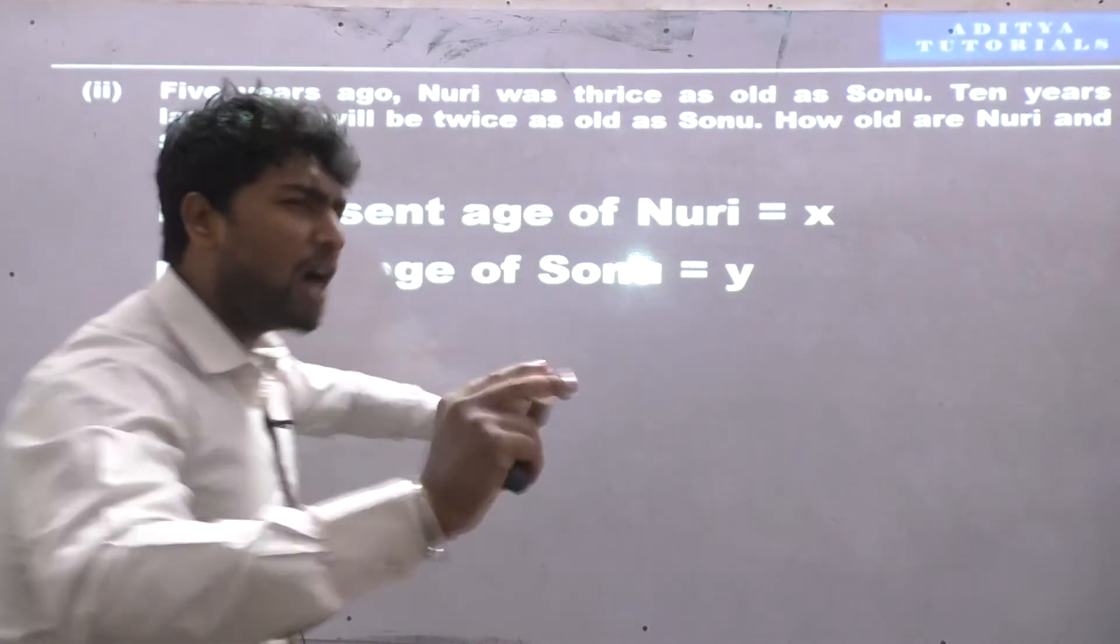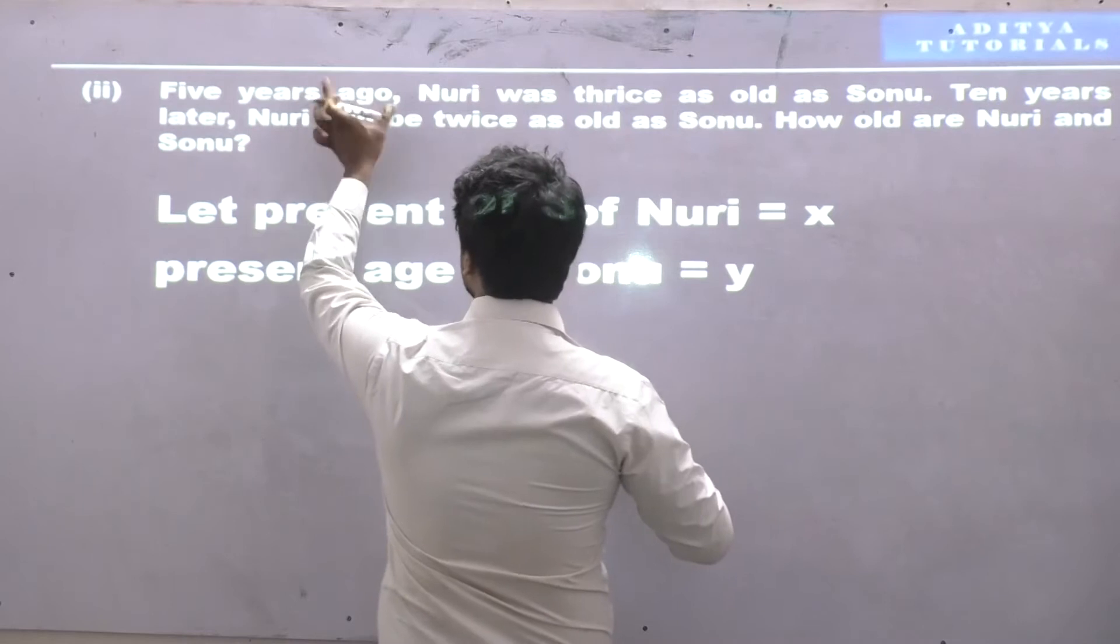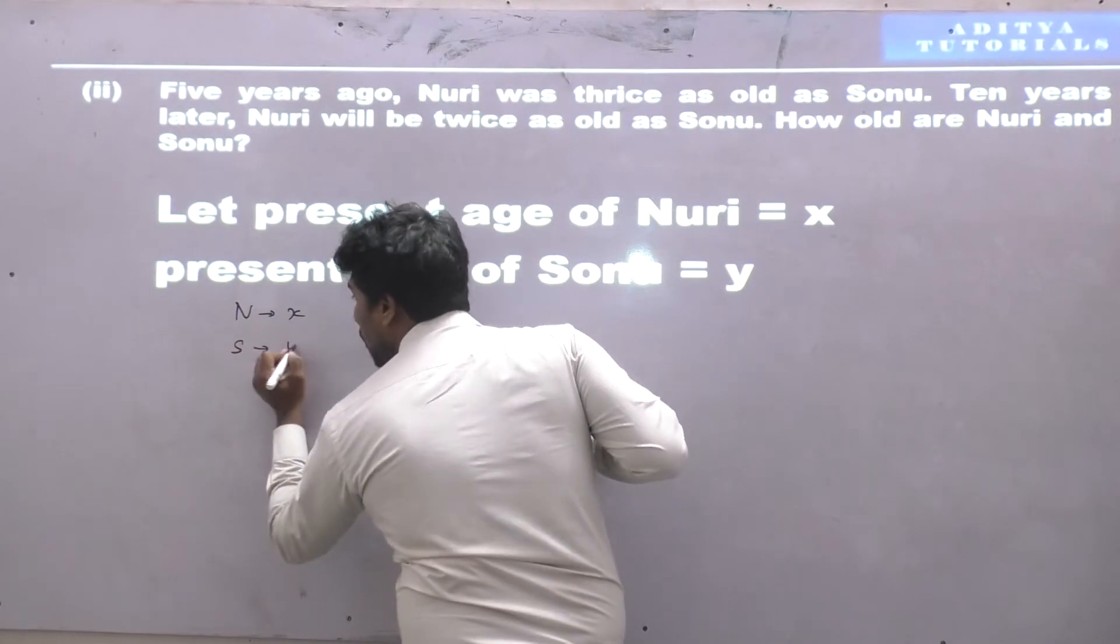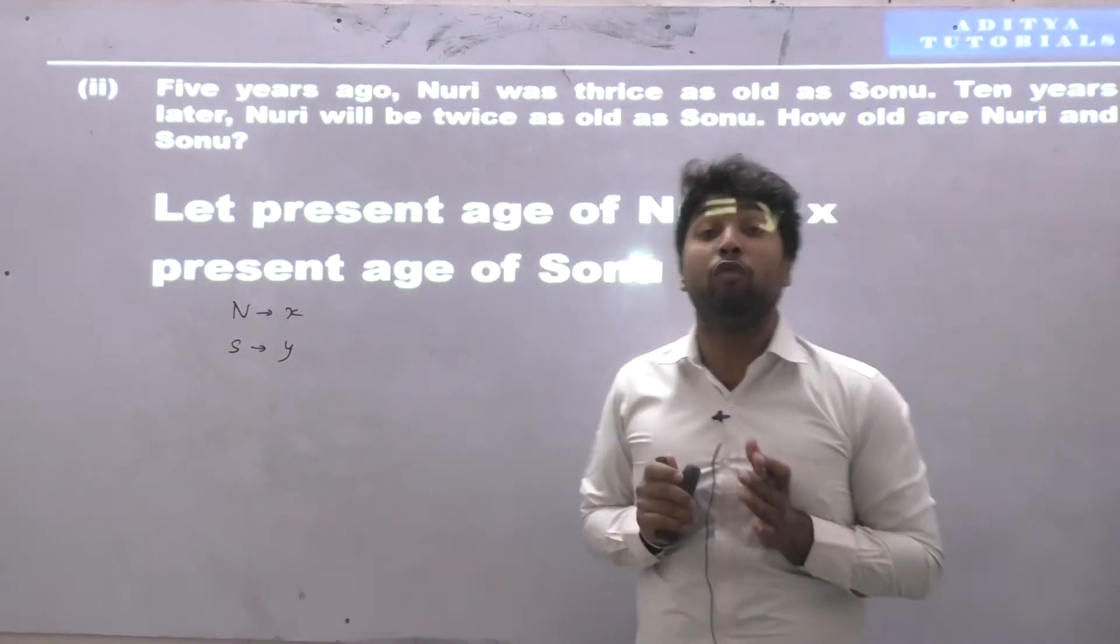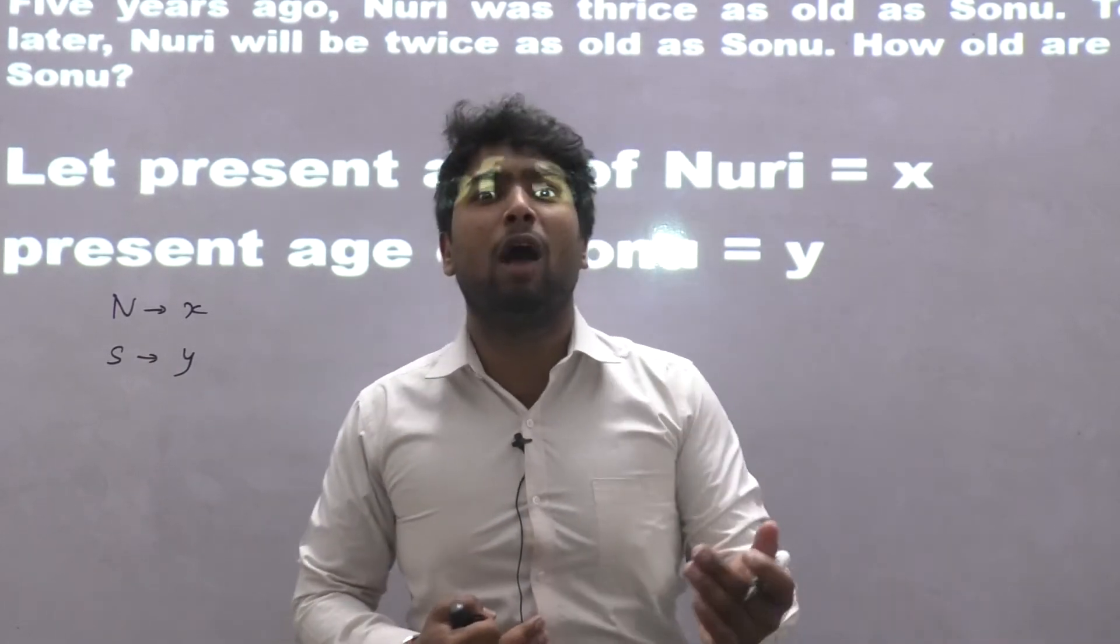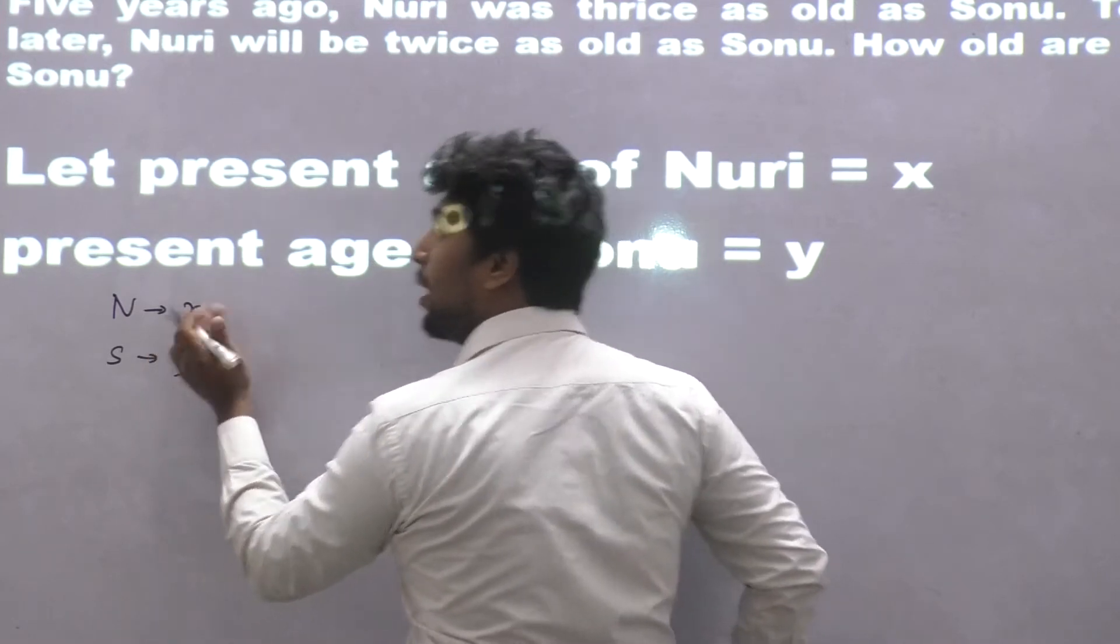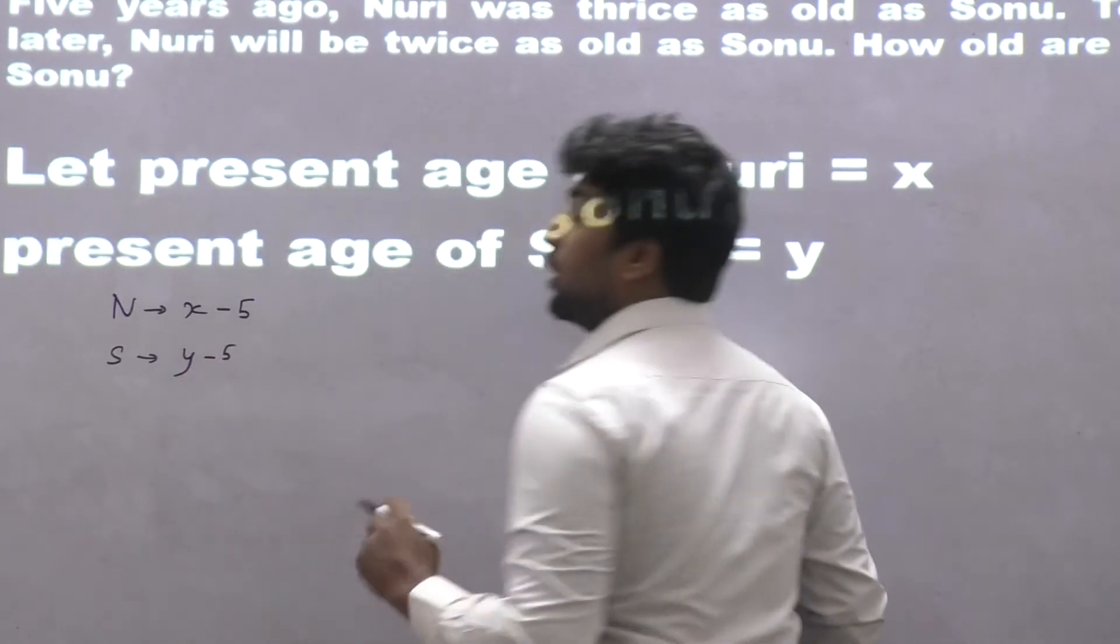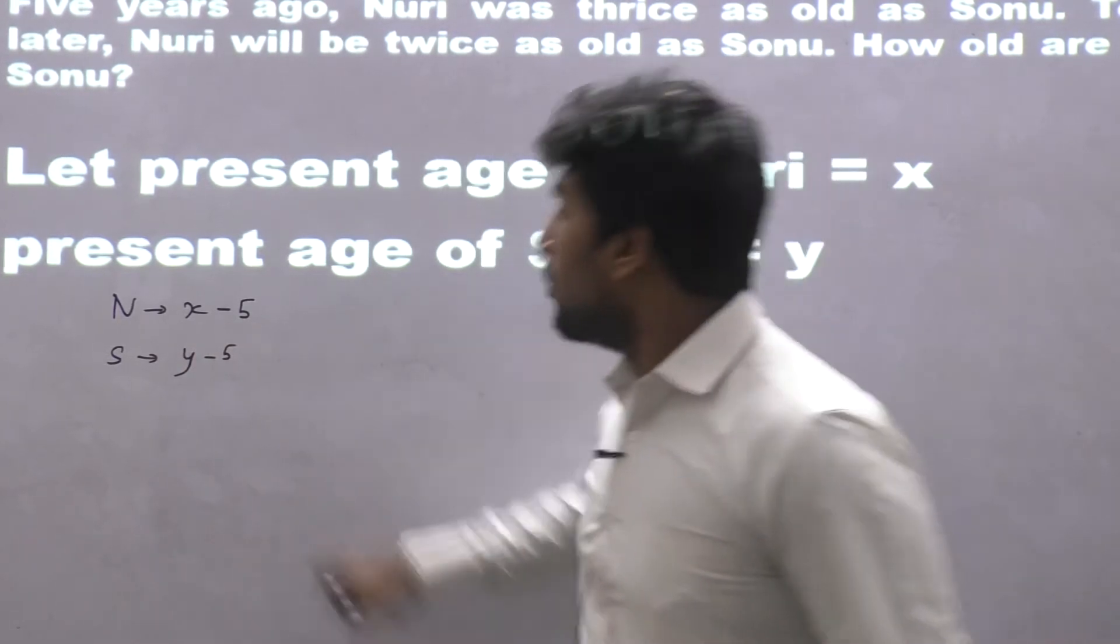Now, according to the first given condition, five years ago - today the present age of Nuri is x and the present age of Sonu is y. But 5 years ago, 5 years before today, our age would be x minus 5. So five years ago, the age of Nuri was x minus 5 and the age of Sonu was y minus 5.